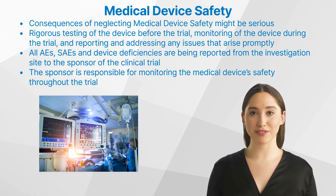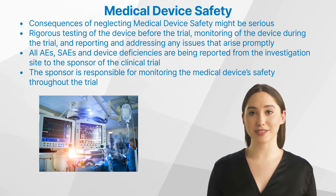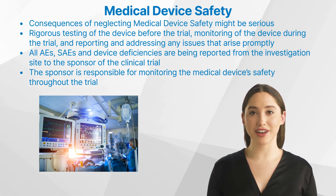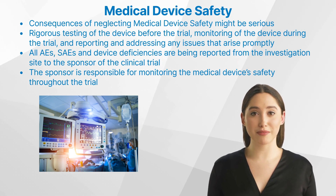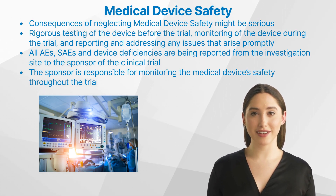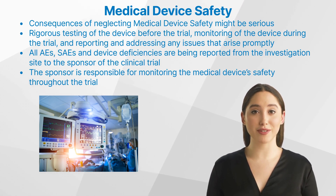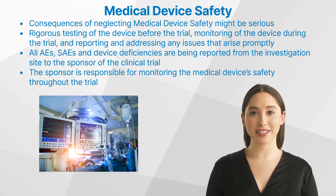How can we ensure medical device safety in clinical trials? There are several steps that can be taken, including rigorous testing of the device before the trial, monitoring of the device during the trial, and promptly reporting and addressing any issues that arise. All adverse events, serious adverse events, and device deficiencies are reported from the investigation site to the sponsor of the clinical trial. The sponsor is responsible for monitoring the medical device's safety throughout the trial, while personnel ensure device safety by using devices properly and following instructions.